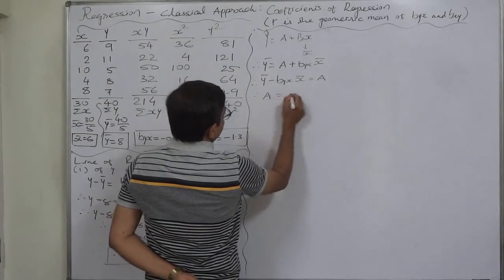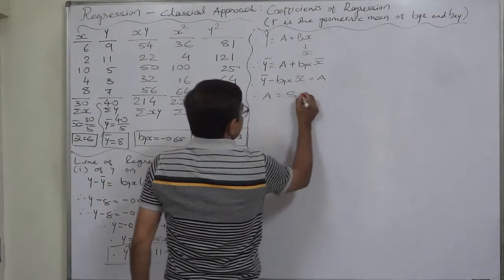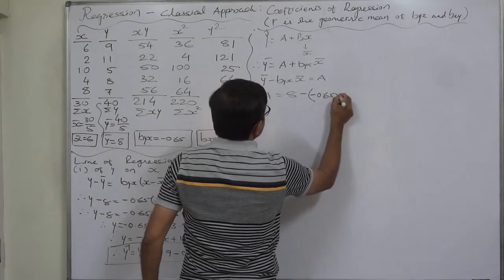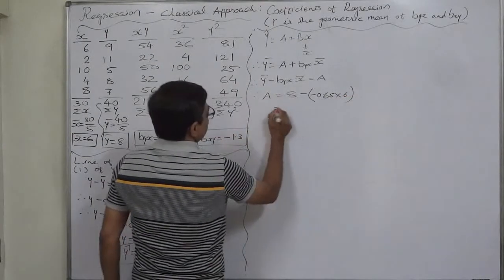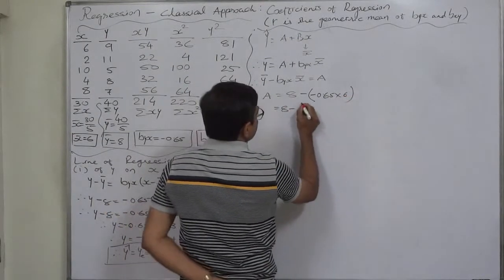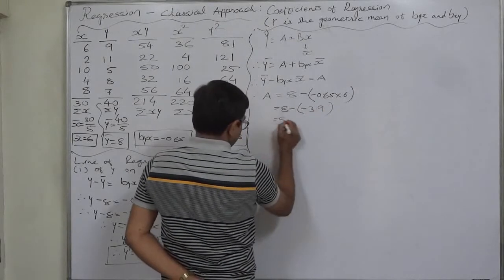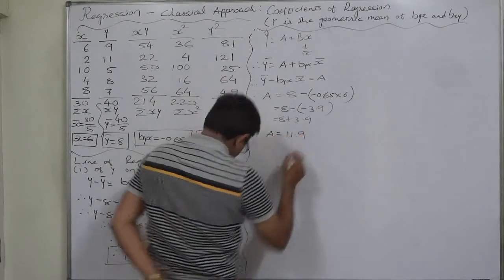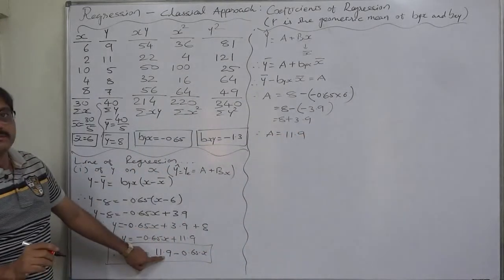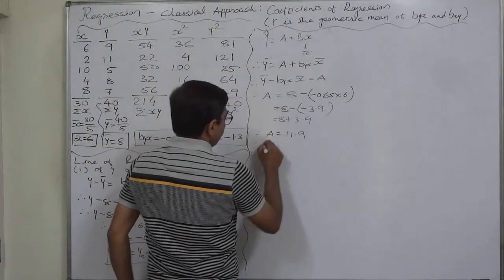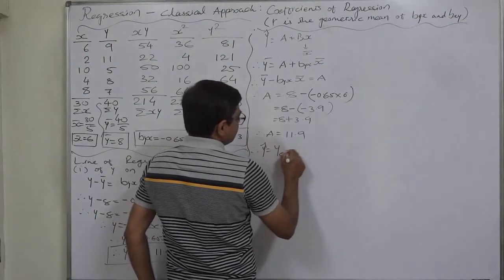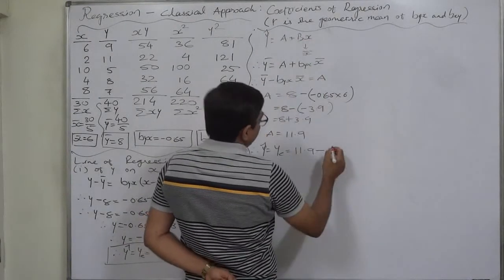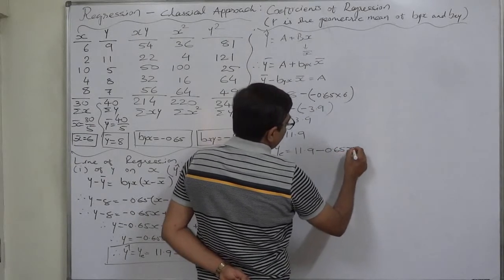Therefore a equals y-bar 8 minus minus 0.65 times x-bar 6, which gives 8 minus minus 3.9, that is 8 plus 3.9. So a equals 11.9. The equation is y-cap equals 11.9 minus 0.65x.